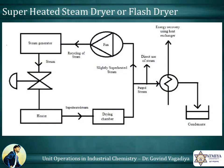Superheated steam dryer, also called flash dryer: a line diagram of the superheated steam dryer can be observed on the screen. This dryer utilizes a stream of superheated steam from the bottom of the dryer. It is called a flash dryer because a flash of superheated steam is used for the drying purpose.